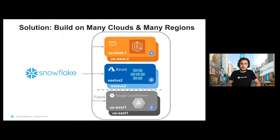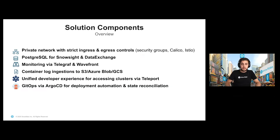As Raman mentioned, let's dive into the solution overview a little bit. This is the high-level architecture of how we were setting up our new Kubernetes infrastructure co-located to regional Snowflake deployments. As we can see, we have AWS, Azure, and GCP as the major cloud providers with multi-regional deployments, and each of them has a Kubernetes deployment. As Snowflake values customer security, we had to look into private networking with strict egress and ingress controls, for which we use security groups, Calico, and Istio.